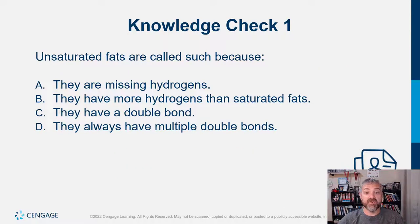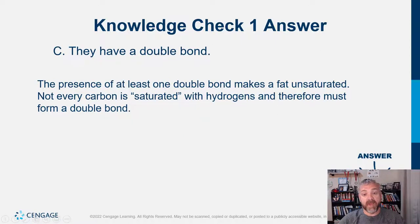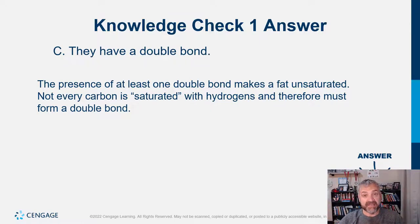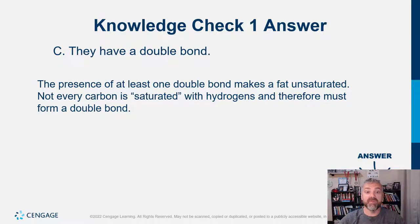Unsaturated fats are called such because they have a double bond. A saturated fat has zero double bonds because it's saturated with hydrogens. Unsaturated fats have one or more double bonds. A monounsaturated fat, like you'd find in olive oil, has a single double bond in its fatty acid tail. Polyunsaturated fats, like you'd find in vegetable oil, will have more than one double bond. So: saturated has zero double bonds, monounsaturated has one, and polyunsaturated has more than one.